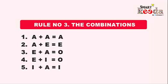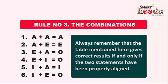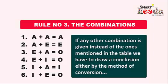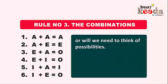The fifth case is I plus A, which gives an I type statement, and the last one is I plus E, which gives an O type statement as the conclusion. Always remember that this table gives correct results if and only if the two statements have been properly aligned. If any other combination is given, we'll have to draw a conclusion either by the method of conversion or by thinking of possibilities.